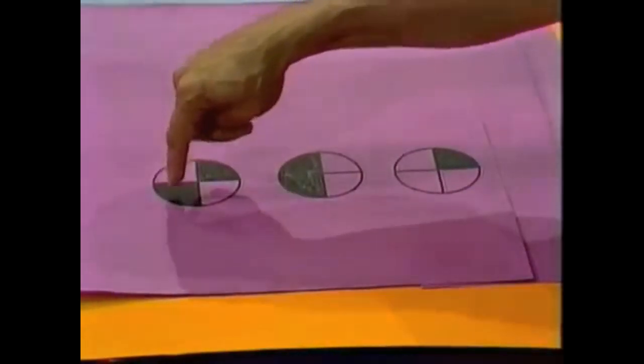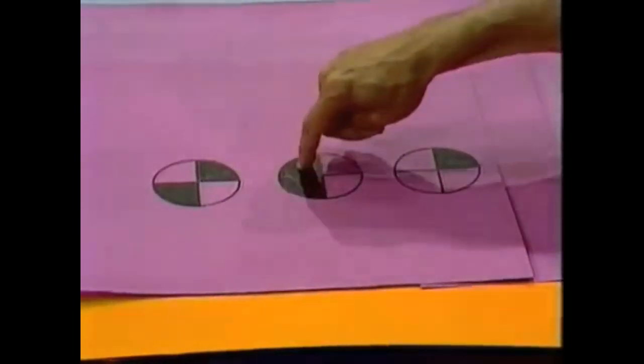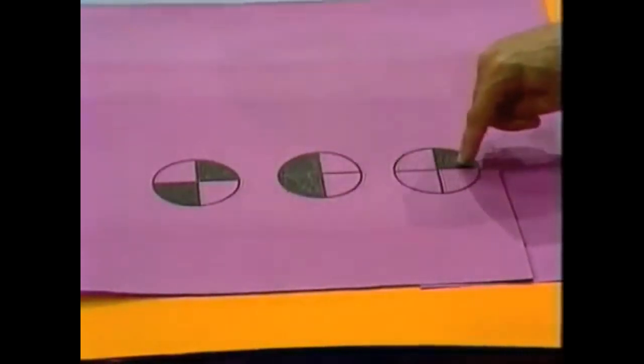In the first one, those two quadrants are colored. In the second one, the two quadrants on the left are colored. And in the third one, just one quadrant is colored, this one here. What will be the fourth one in the series? Figure it out.